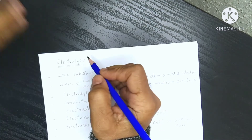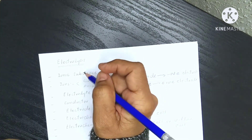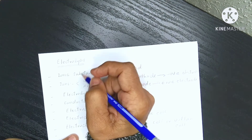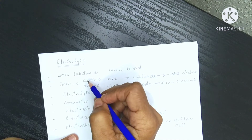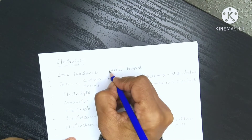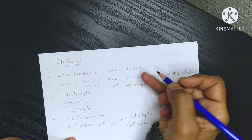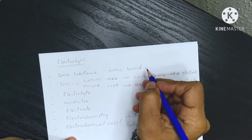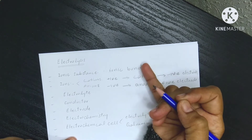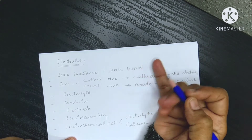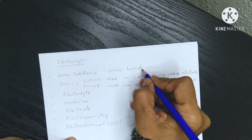Electrolysis is a very interesting and easy topic. Before starting, I want to explain some key terms. Ionic substances are those substances in which positive and negative ions are held together through ionic bonds. They have strong electrostatic forces of attraction and cannot conduct electric current when they are in solid form. They only conduct electricity when they are in solution form or in molten form.